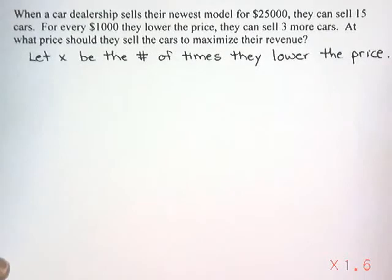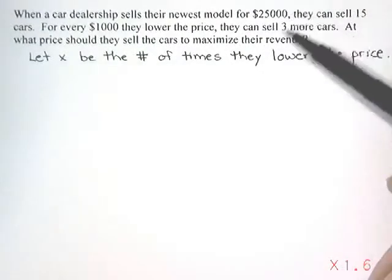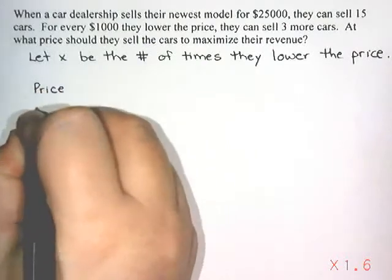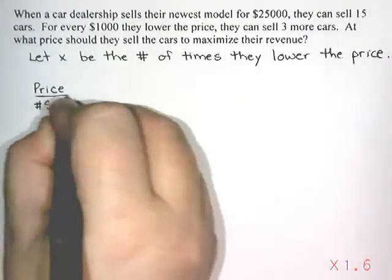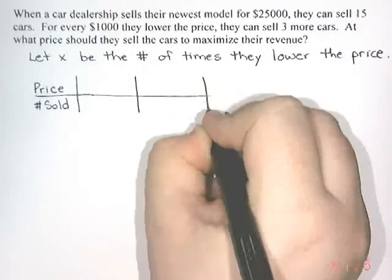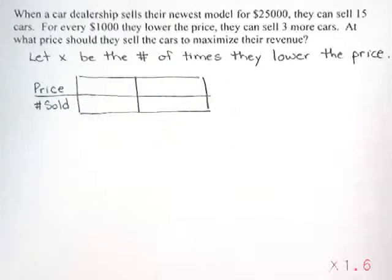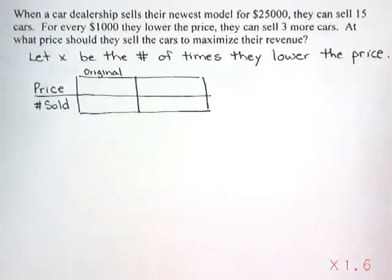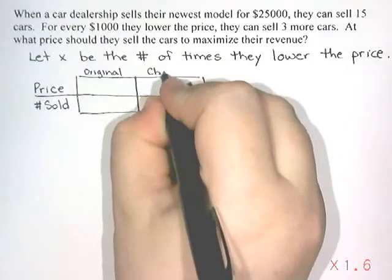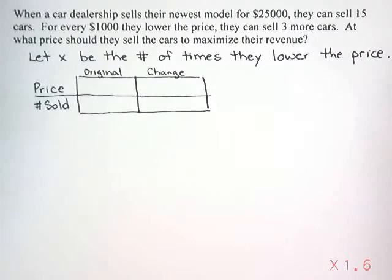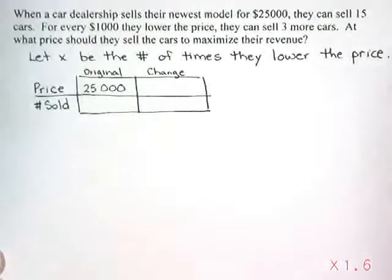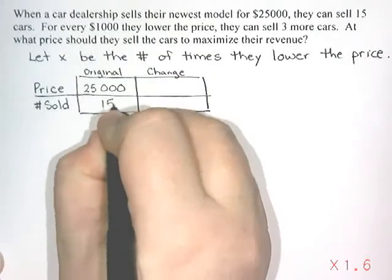From there, when I'm doing one of these questions, I like to organize my information using a table — I find that helps. So what we've got here is the price and how many they're selling. I'm going to make a little table with price and number sold. We're going to compare two things: what they can do right now — I usually call that the original — and what they're planning to change. The question says they can sell it for $25,000, so our starting price is $25,000, and at that price they can sell 15 cars.